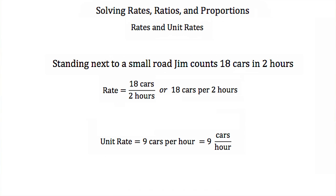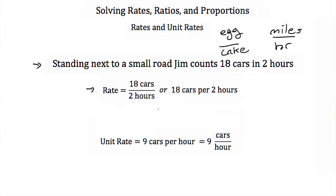Now the next thing we have to discuss is rates and unit rates. Rates are just ratios that represent two different quantities — like eggs per cake or miles per hour. They have a different unit in the numerator and a different unit in the denominator. So standing next to a road, Jim counts 18 cars in 2 hours. His rate would be 18 cars over 2 hours. A unit rate is just like a normal rate except the denominator is always 1, so Jim's unit rate would be 9 cars per 1 hour, or 9 cars per hour.